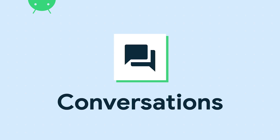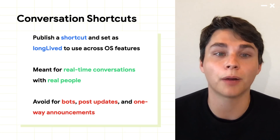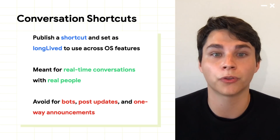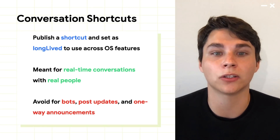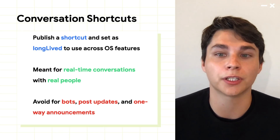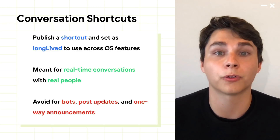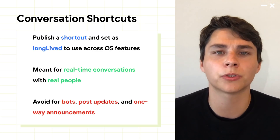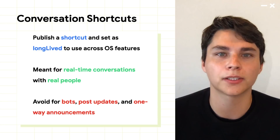The key ingredient is building a conversation shortcut. Conversation shortcuts are shortcuts with the right combination of metadata and properties so that they can be used across conversation-related features. To create these, you'll need to publish a regular shortcut with all of the essential details, like an icon, name, and intent. Most importantly, you'll need to set it as long-lived so that the operating system knows to keep track of them. While there are many applications of conversations, conversation shortcuts are meant to refer to activities centering around real-time conversations with real people. For applications like chat apps, conversation shortcuts aren't meant for bots or for messages which users cannot or wouldn't respond to, such as one-way announcements, or wouldn't respond to in real-time, such as updates or posts.